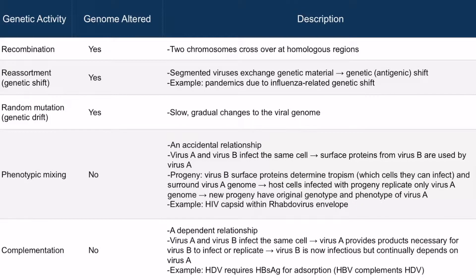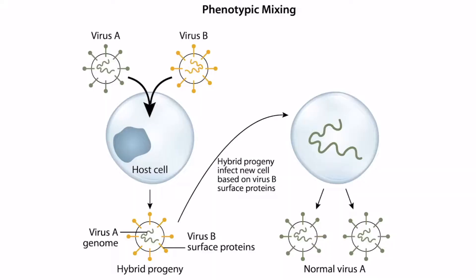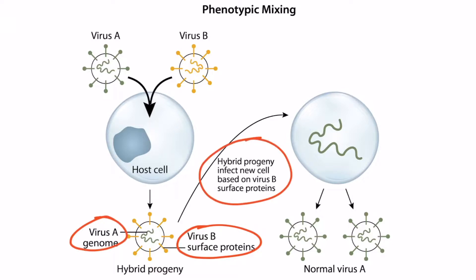One important term to associate with phenotypic mixing is tropism. Tropism determines which cells or tissues the virus can infect. Those surface proteins from virus B allowed the virus A genome to enter host cells that it normally couldn't — in other words, the tropism of virus A expanded.